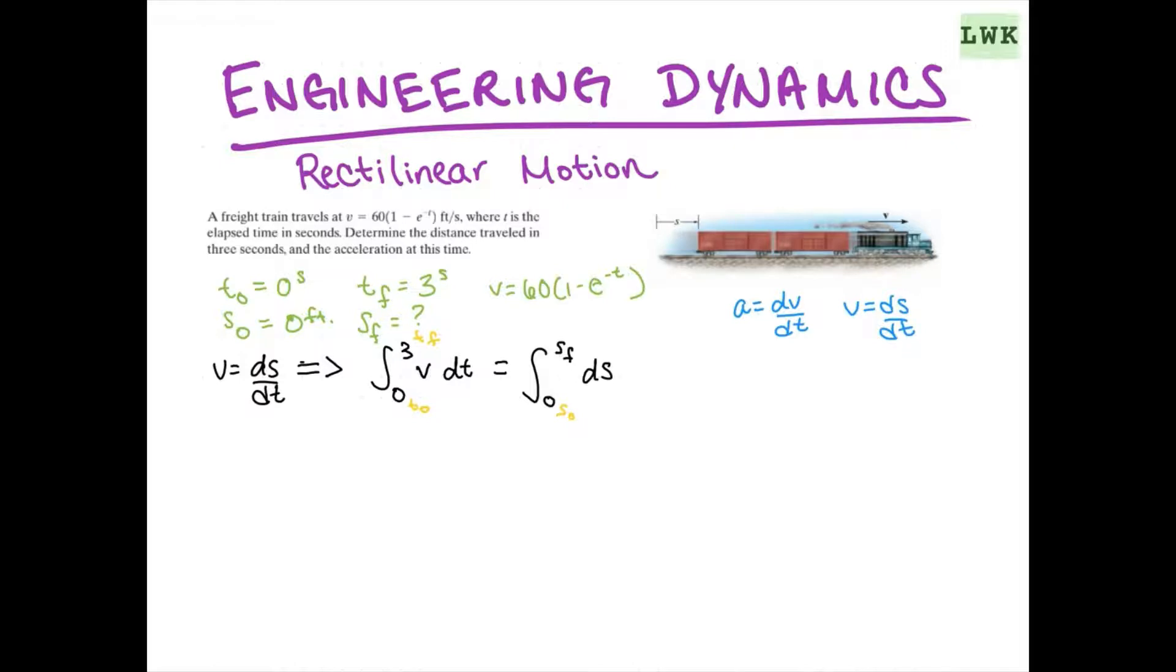So, let's simplify this even further by putting in what we know. So, 0 to sf, ds, is going to be equal to 0 to 3 of our velocity expression. Let's put that in dt. So, this really becomes, at this point, pretty much just a calc problem. So, I'm going to save you some of that pain. And just write s is going to be equal to 60(e to the negative t) plus t. And we're going to evaluate that between 0 and 3.